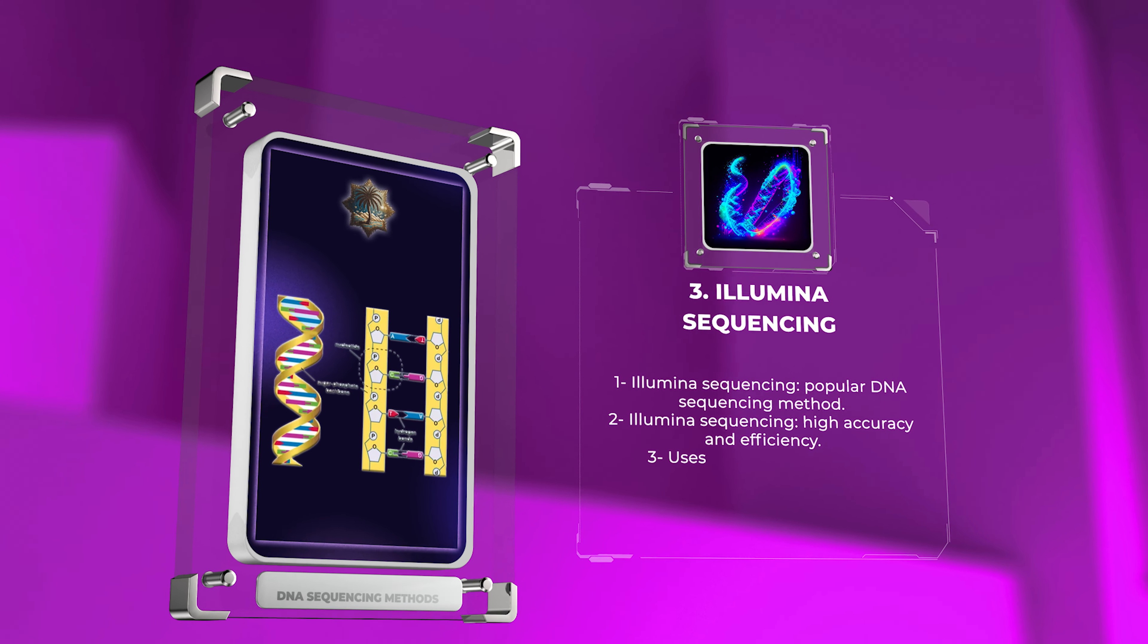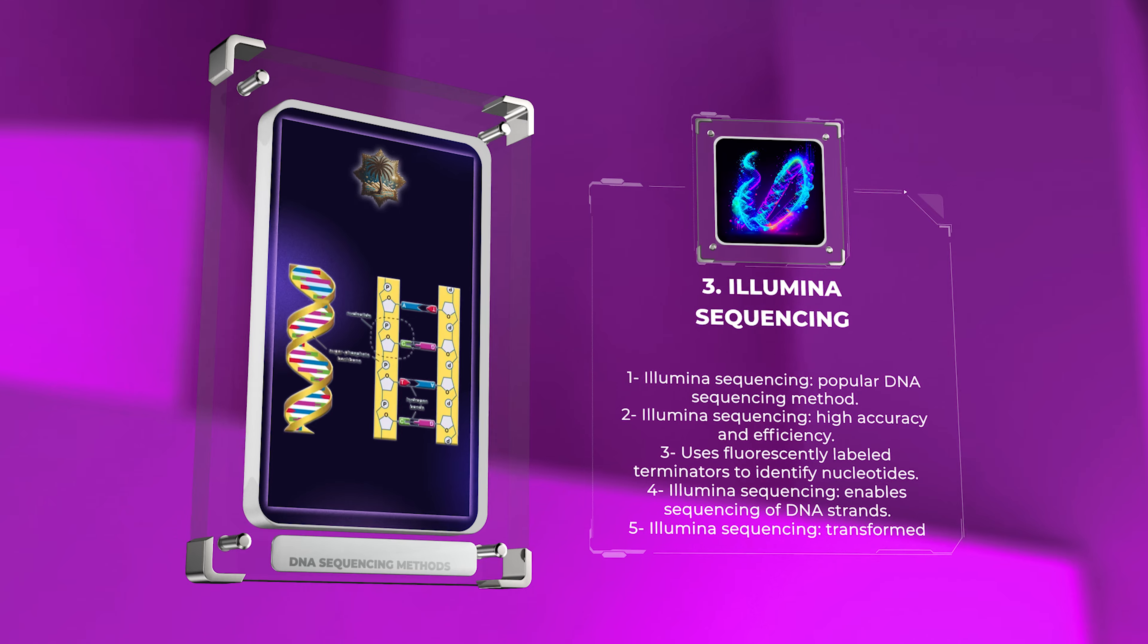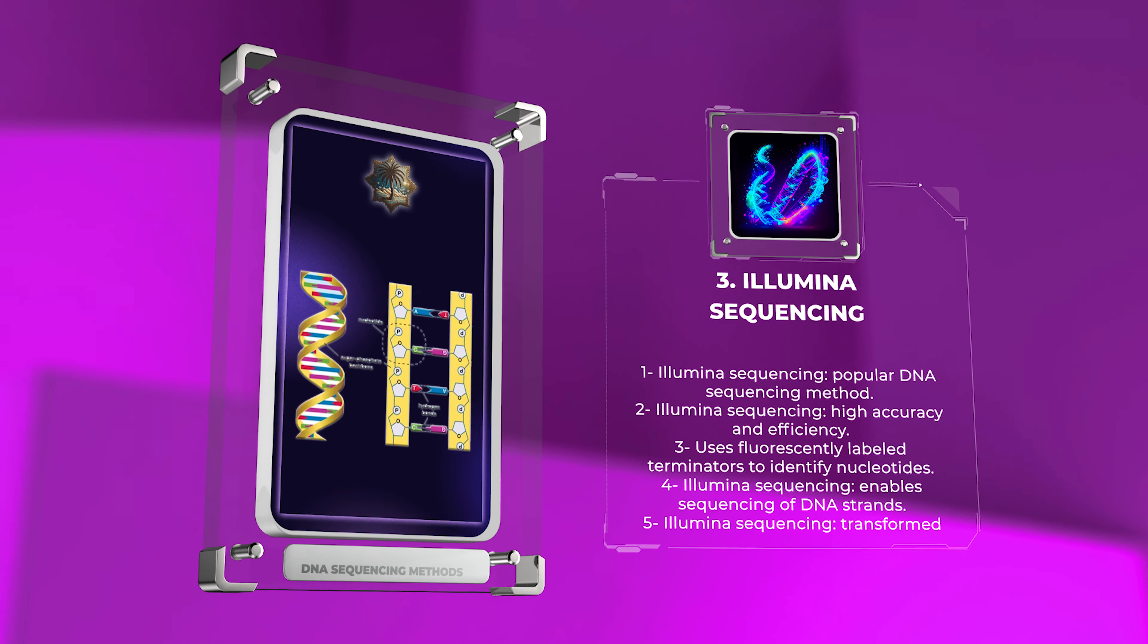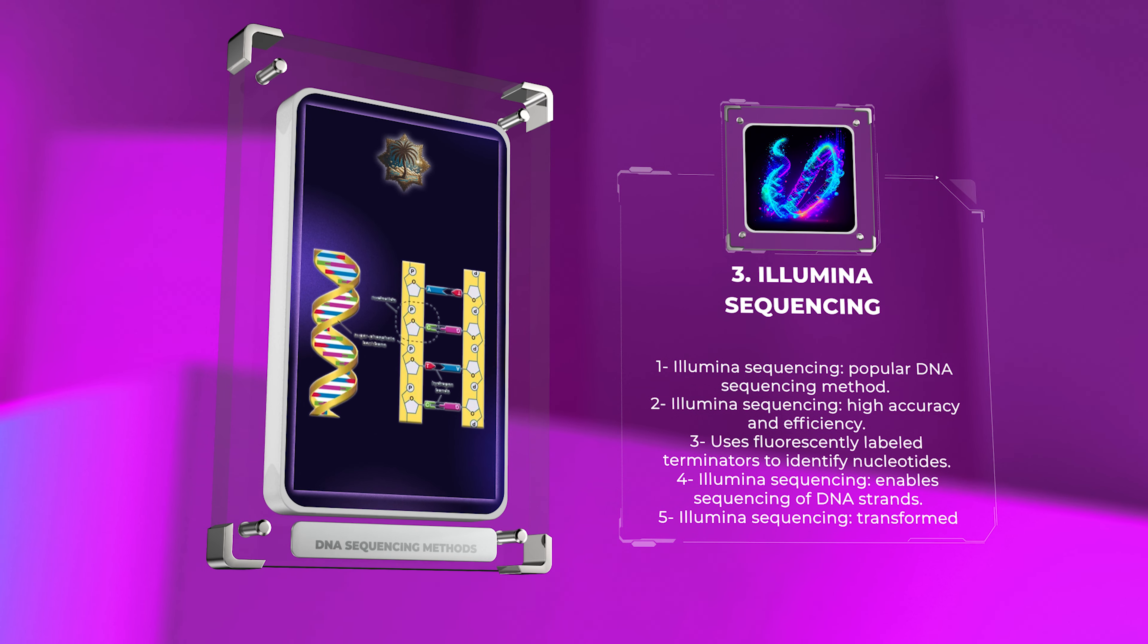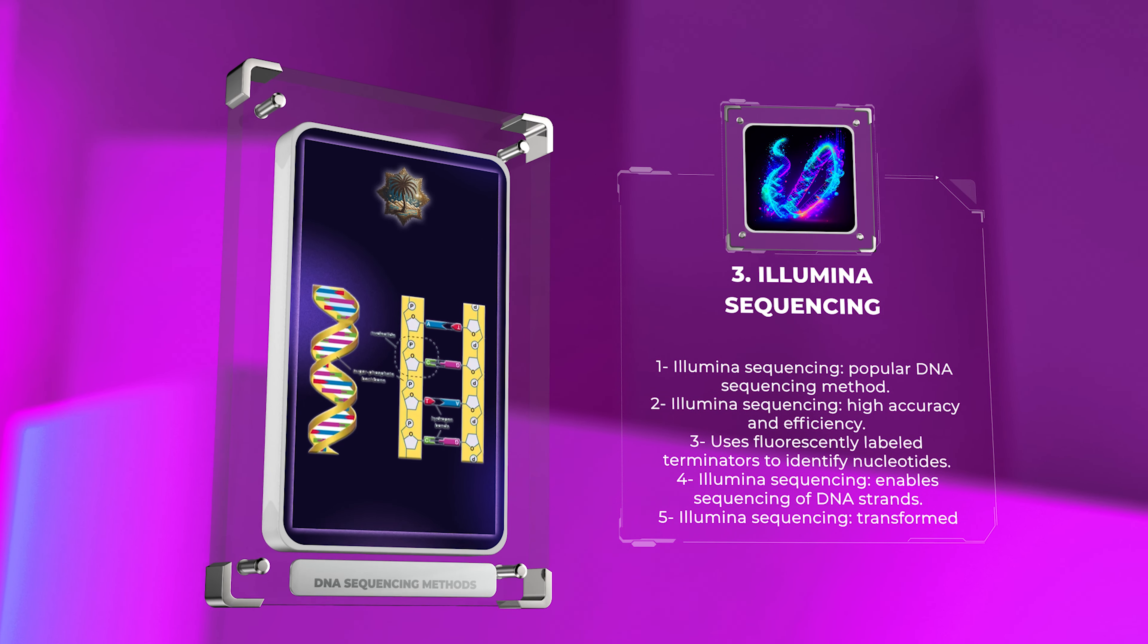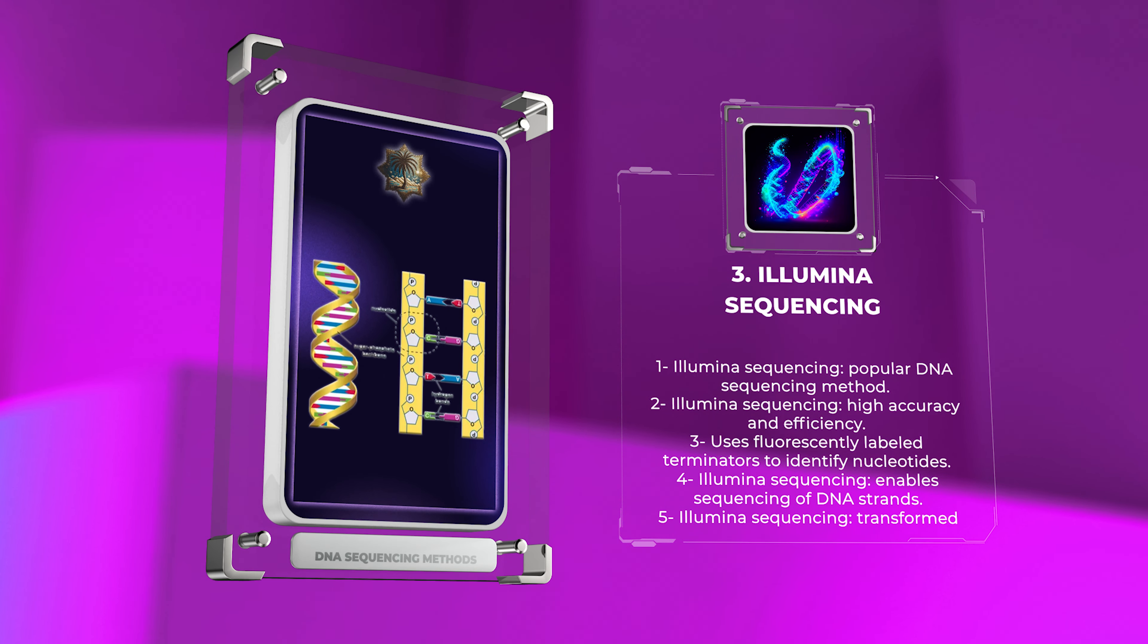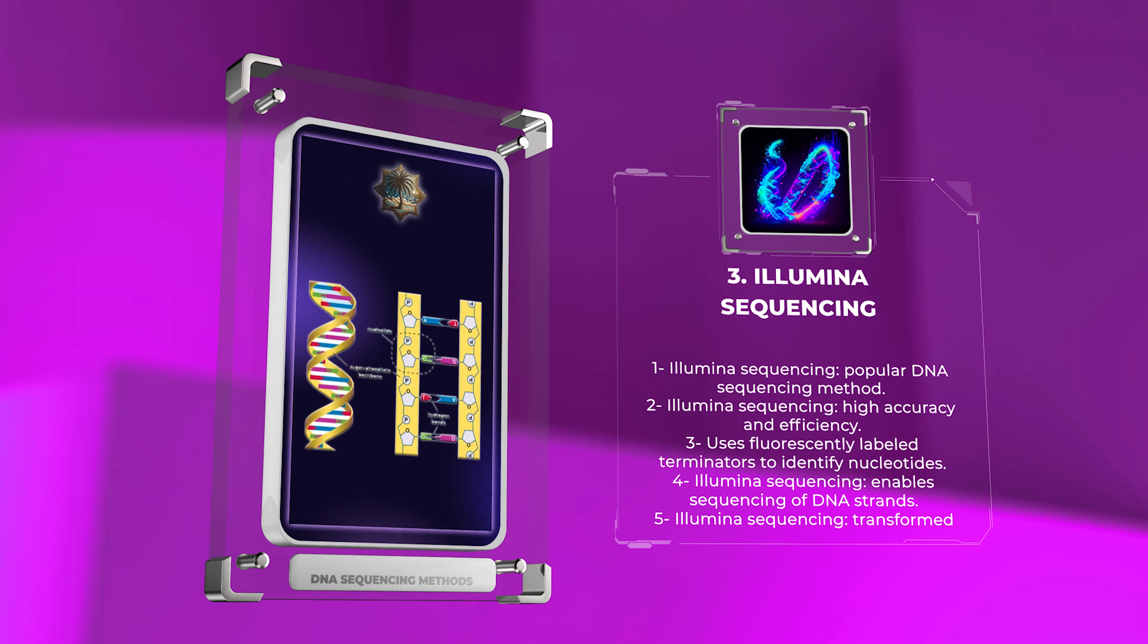Illumina sequencing is a popular DNA sequencing method known for its high accuracy and efficiency. It uses fluorescently labeled terminators to identify nucleotides, enabling the sequencing of DNA strands. This technology has transformed genomics and has applications in various fields, such as personalized medicine and cancer research.